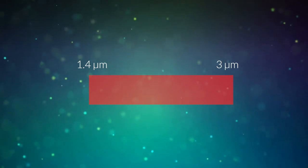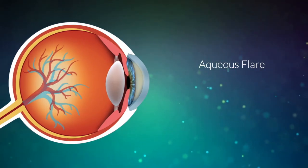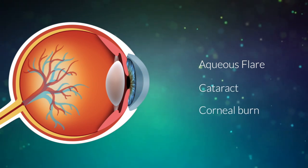Further into the infrared, between approximately 1.4 and 3 microns, known as the IR, exposure to these wavelengths can result in aqueous flare, which is abnormal protein in the aqueous humor, cataract, and corneal burn.